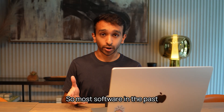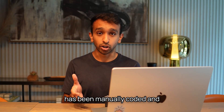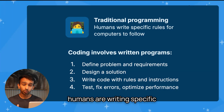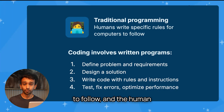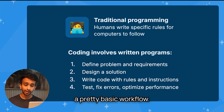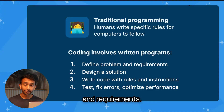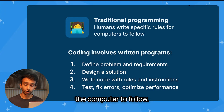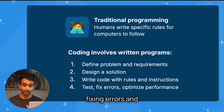Most software in the past has been manually coded and built by human developers, meaning humans are writing specific rules for the computer to follow. The human developer is usually following a basic workflow: defining a problem and requirements, designing a solution, writing code with rules and instructions, then testing, fixing errors, and optimizing performance.